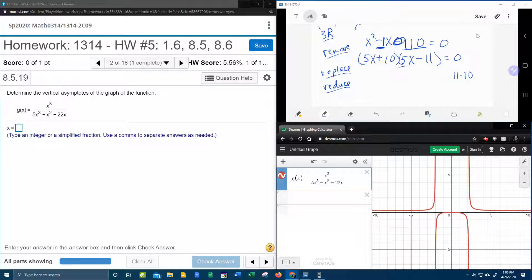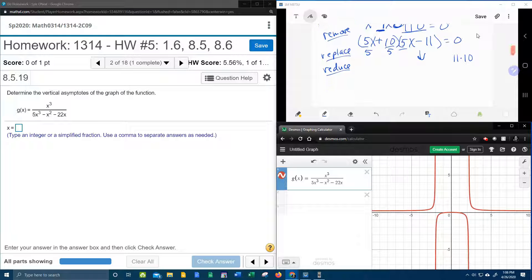So in the first set of parentheses, I can reduce by 5. But in the second set of parentheses, 5 and 11 won't reduce, and so that's just going to come down. So 5 divided by 5, that's going to leave me an x.